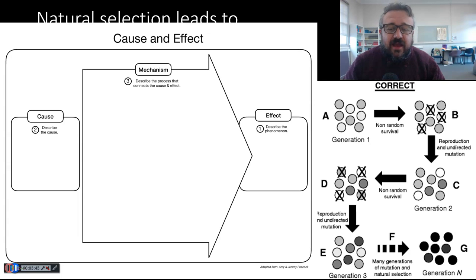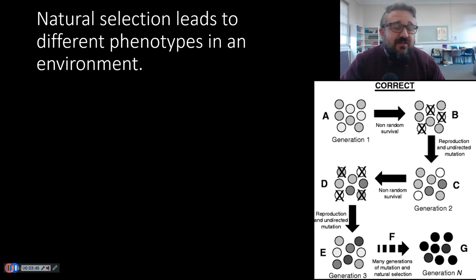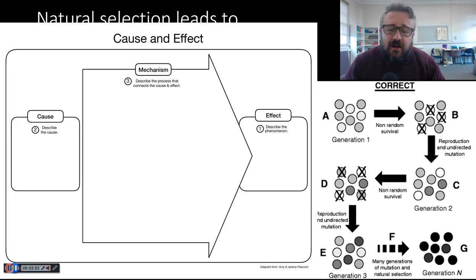First, we want to use our cause and effect. Again, natural selection leads to different phenotypes in an environment. Might be worth writing that down.